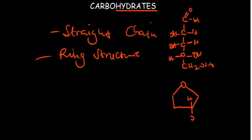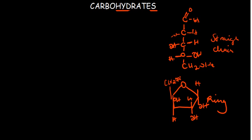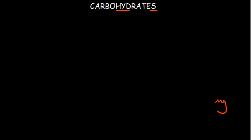When you look at the ring structure, you find something like a cyclic arrangement with OH groups attached. So carbohydrates can exist in either the straight-chain form or the ring structure form, and we're going to see how these rings come about.